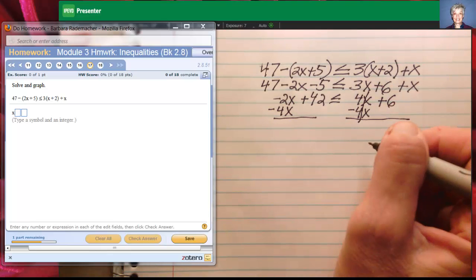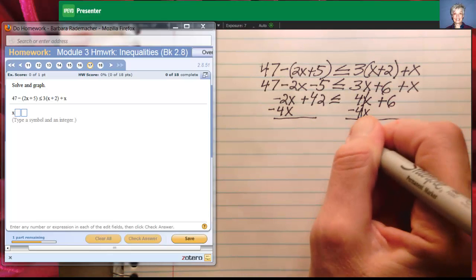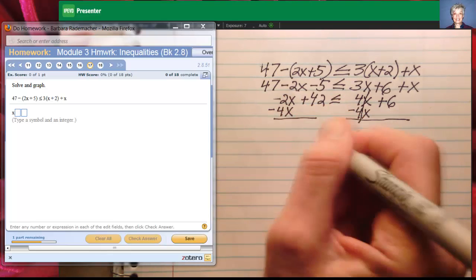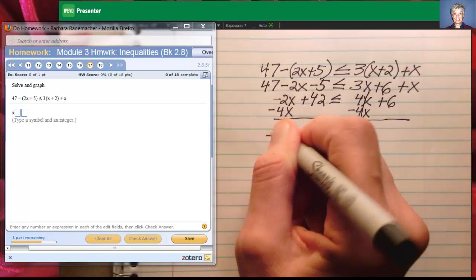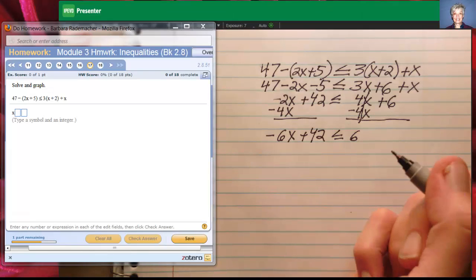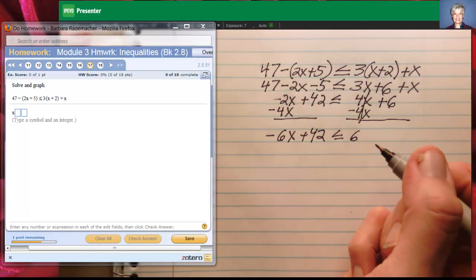That'll zero out the x term over here. I'll be left with a 6. I'll have negative 6x. I'll have a negative 6x over here. Plus 42. Getting close to the end.